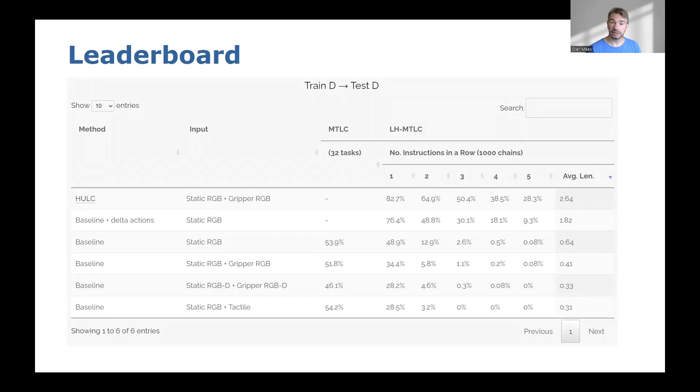We provide an online leaderboard on the project page as an opportunity for researchers to showcase their state-of-the-art results on CALVIN in the future. Additionally, we published an improved approach in the paper 'What Matters in Language-Conditioned Robotic Imitation Learning Over Unstructured Data,' which achieves a promising 28.3% success rate on following five instructions in the single environment challenge.